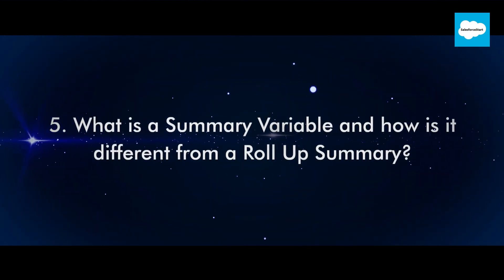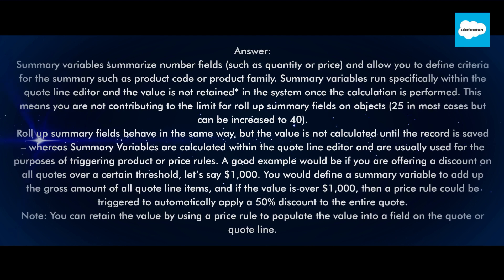Question 5: What is a summary variable and how is it different from a roll-up summary? Summary variables summarize number fields, such as quantity or price, and allow you to define criteria for the summary such as product code or product family. Summary variables run specifically within the quote line editor and the value is not retained in the system once the calculation is performed, meaning you are not contributing to the limit for roll-up summary fields on objects — 25 in most cases but can be increased to 40. Roll-up summary fields behave in the same way, but the value is not calculated until the record is saved, whereas summary variables are calculated within the quote line editor and are usually used for triggering product or price rules.